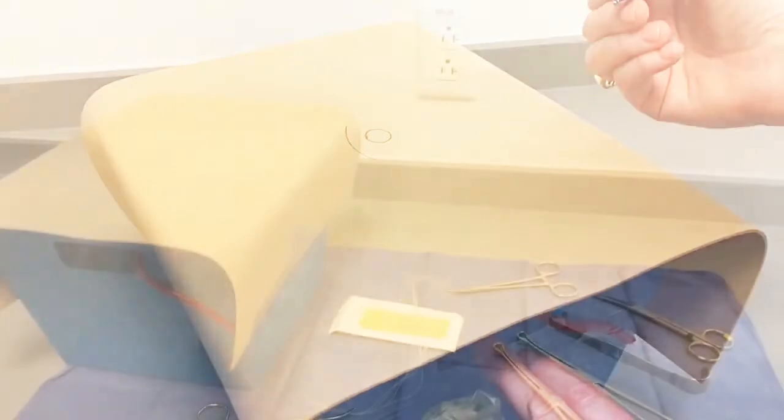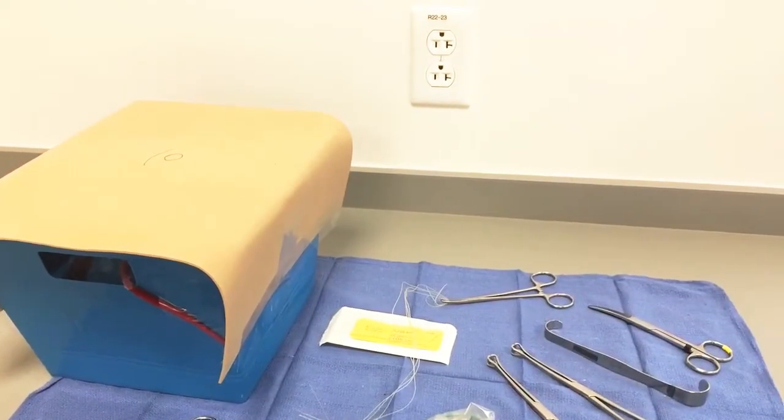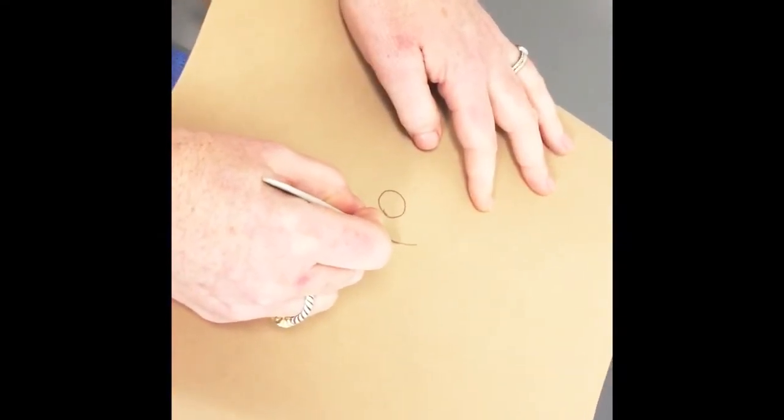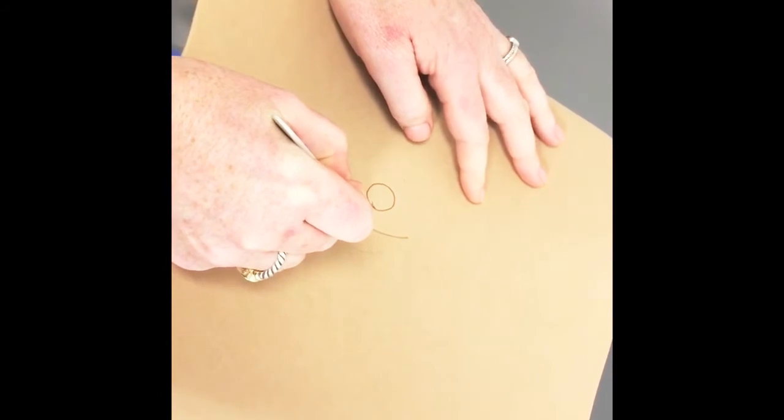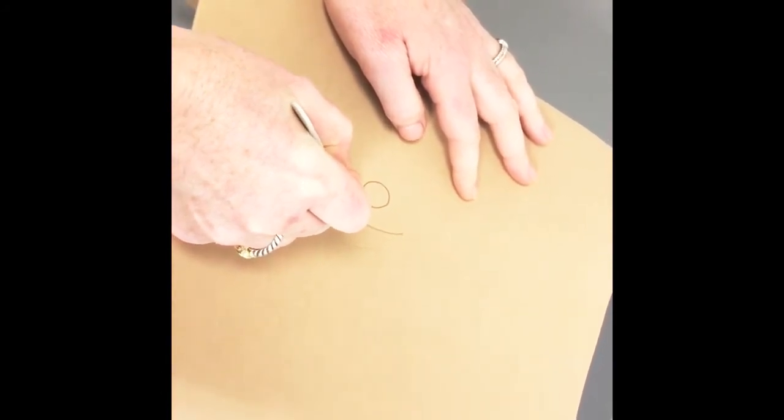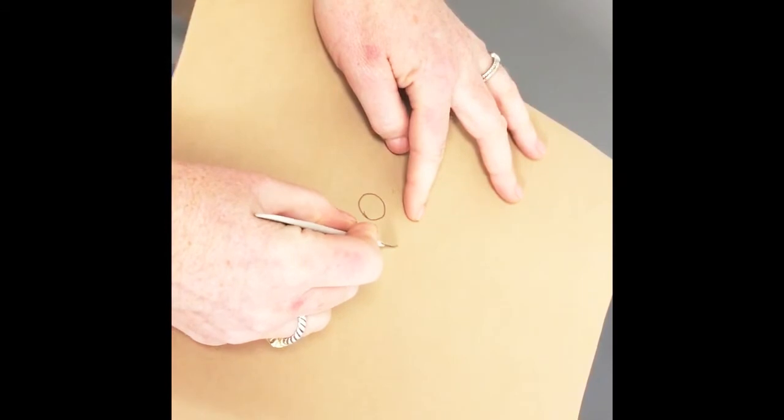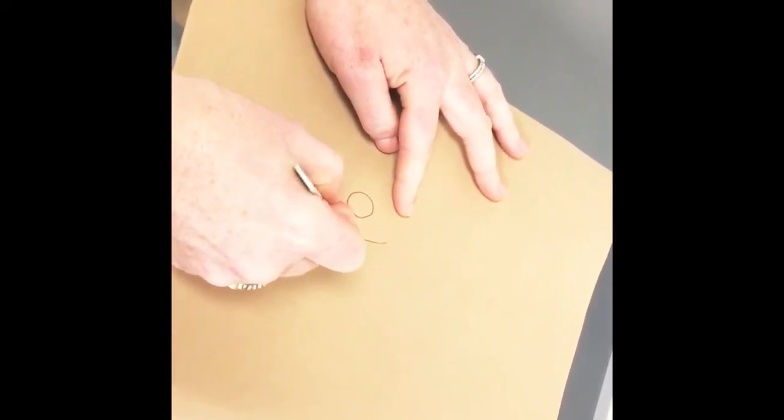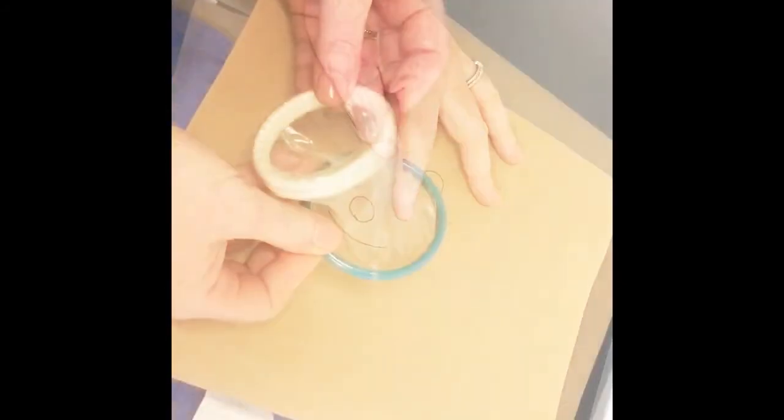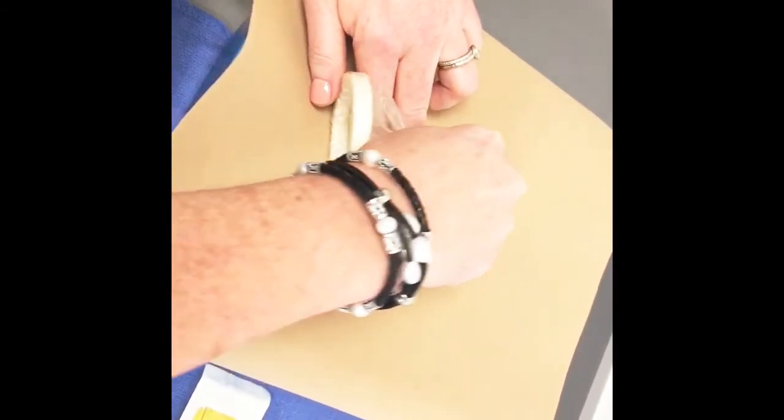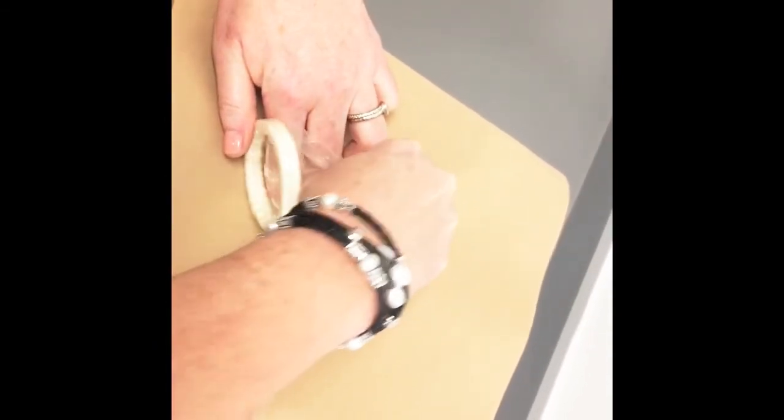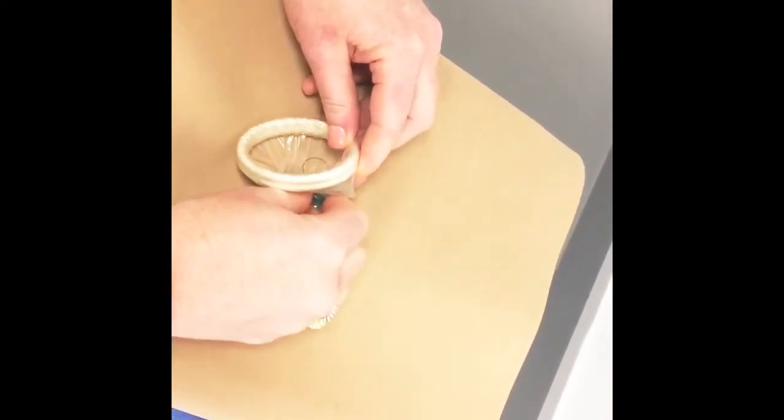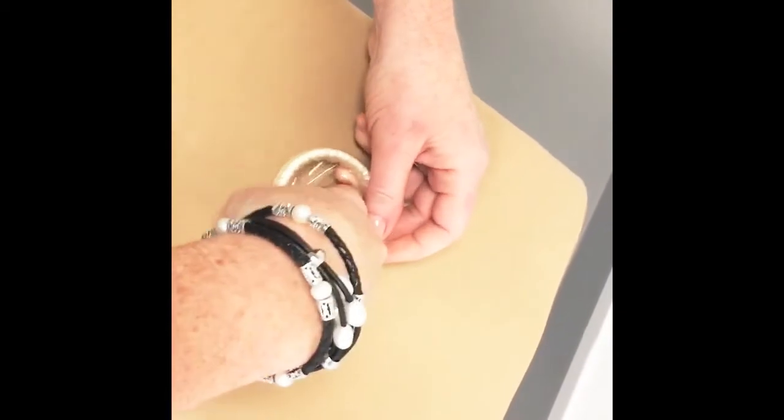We are now ready to begin our simulation. All that is needed is your standard postpartum tubal ligation set. An incision is made with the scalpel. The resident is then instructed on how to place the disposable self-retaining retractor. In our practice, the use of the self-retaining retractor increases exposure and ease of the procedure.